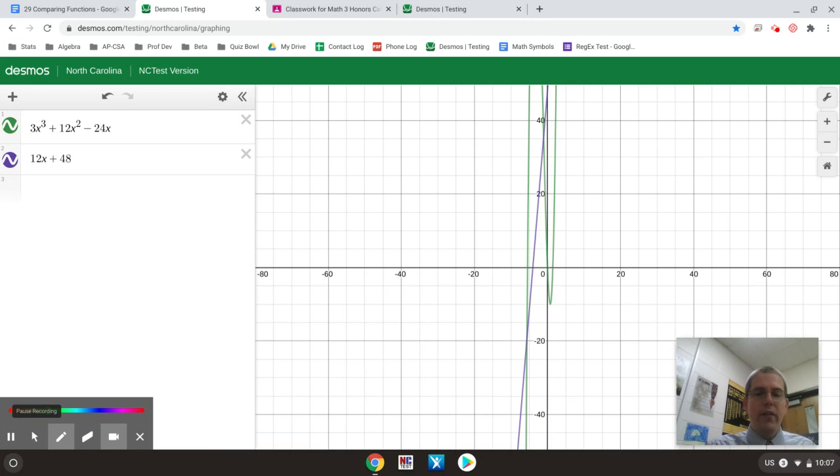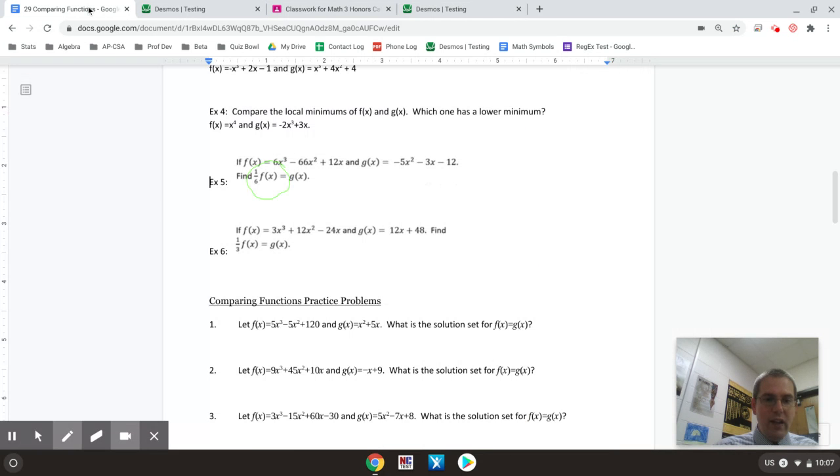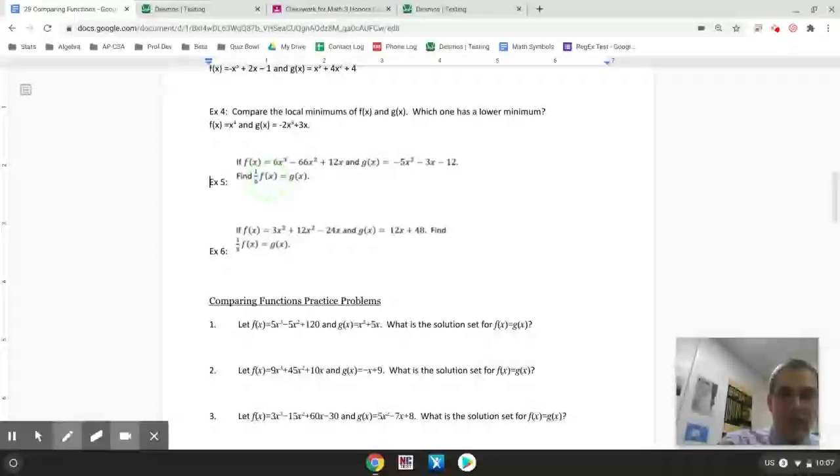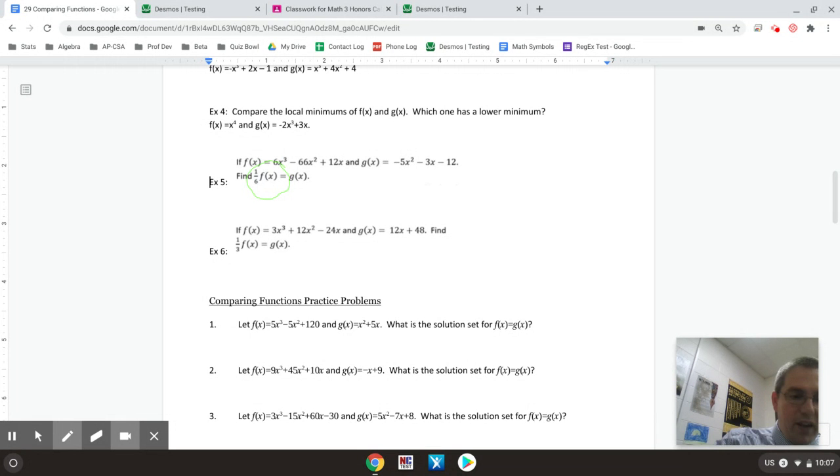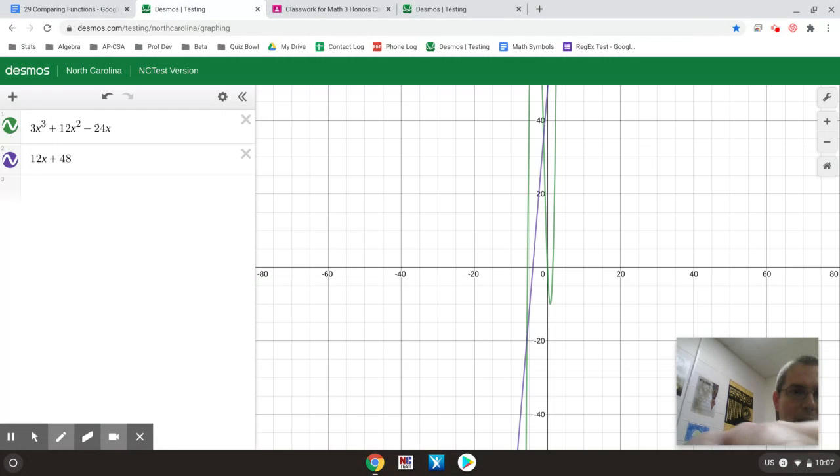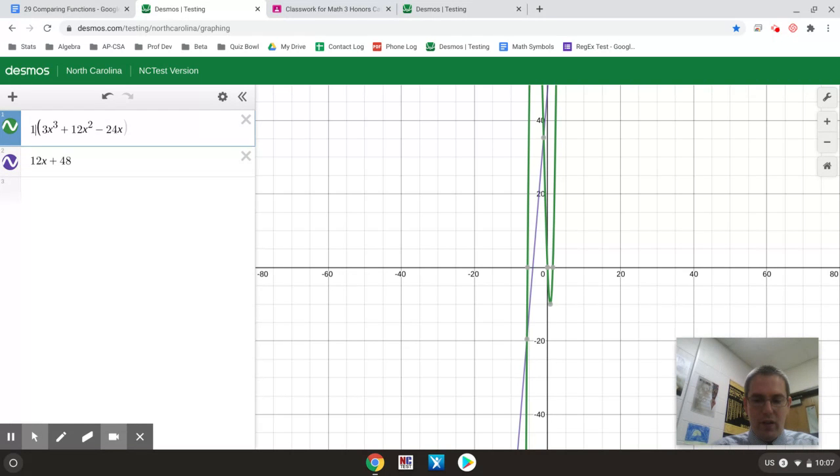Okay, now once I have these next equations, notice that once again, I'm not actually needing the f of x and g of x. I'm needing 1/3 f of x and g of x. So I'm going to go back to Desmos, and there's two ways to do this. The first way is I could type a 1/3 in front just like I did earlier, and we'll show you that first. And if we have time, we'll show you the other way.